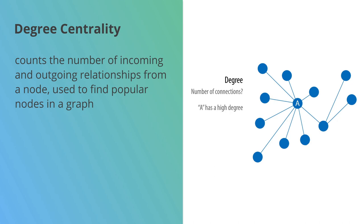Degree centrality is probably the simplest of the algorithms. The idea here is that we count the number of incoming or outgoing relationships from a node, and we're using it to find popular nodes in a graph.